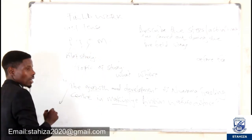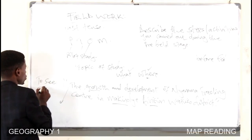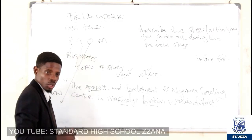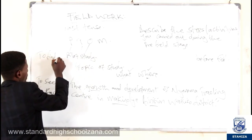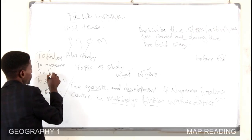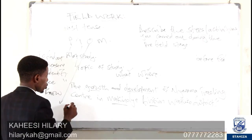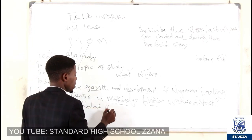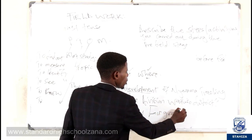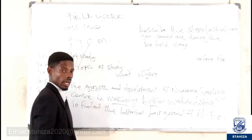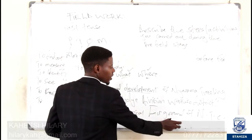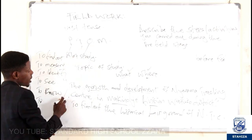Then come the objectives of the study. Words like 'to see,' 'to know,' or 'to get' must not be used. Instead use words like 'to find out,' 'to measure,' or 'to identify.' For example: to find out the historical background of Nyanama Trading Center; to find out the location of Nyanama Trading Center; to find out the problems faced by traders in Nyanama Trading Center. Those are your objectives.